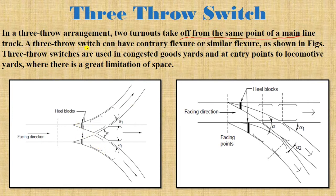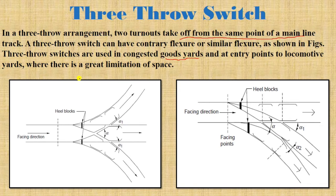A three throw switch can have contrary flexor and similar flexor configurations. In the similar flexor type, both turnouts are in one direction; in contrary, they are in opposite directions. Three throw switches are used in congested goods yards and at entry points to locomotive yards where there is a great limitation of space.